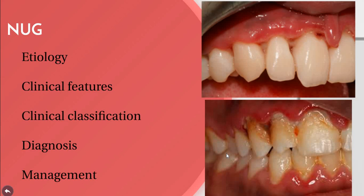Regarding necrotizing ulcerative gingivitis, this is an endogenous oral infection characterized by necrosis of the gingiva. It is also called trench mouth, due to its prevalence in combat trenches. Other synonyms include Vincent infection, fusospirochetal gingivitis, and acute ulcerative gingivitis. Tissue destruction is caused by endogenous organisms that act either directly on the tissue or indirectly by triggering an inflammatory reaction.